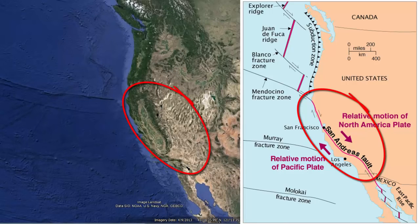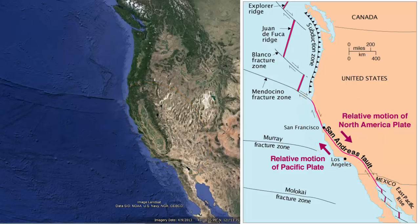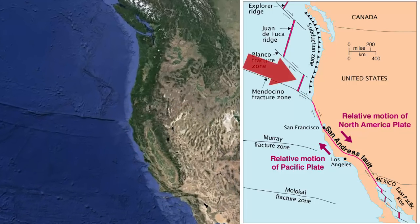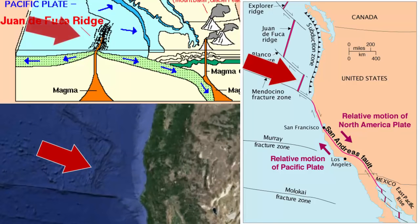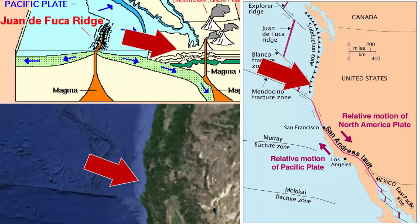As this map shows, we have a number of plate boundaries within or near the state. Notice at the northern part of California we have a divergent plate boundary, or an offshore seafloor spreading center, where new oceanic crust forms and then is pushed away. Here, along the coast, that crust collides with and then sinks under northern California.